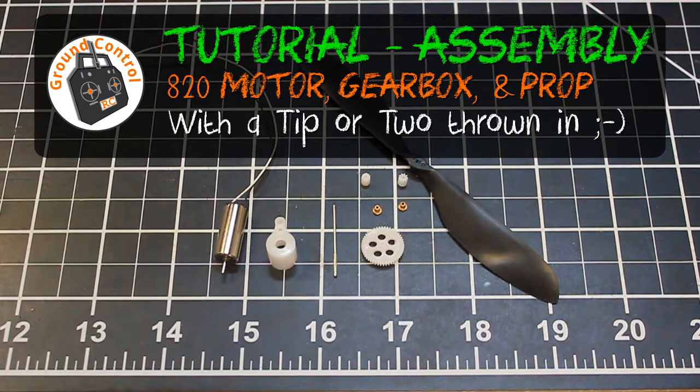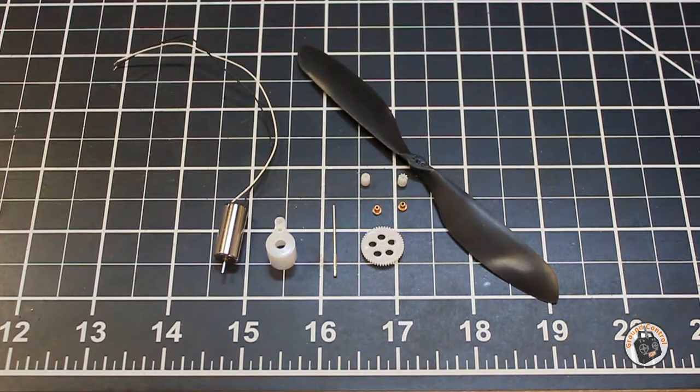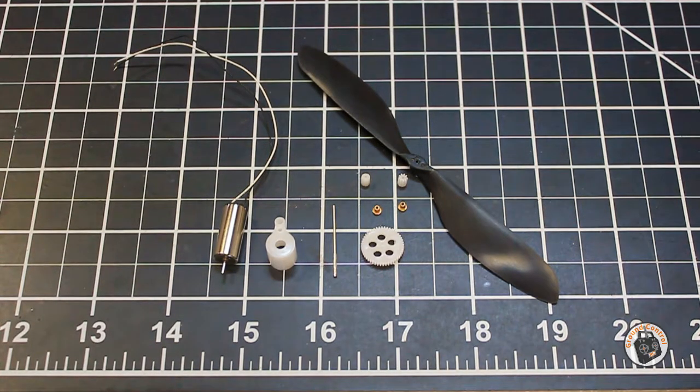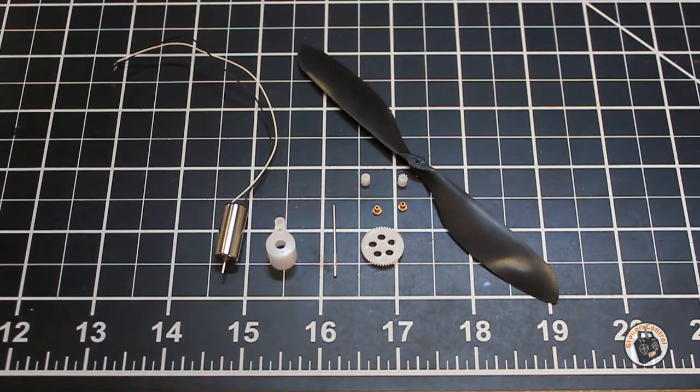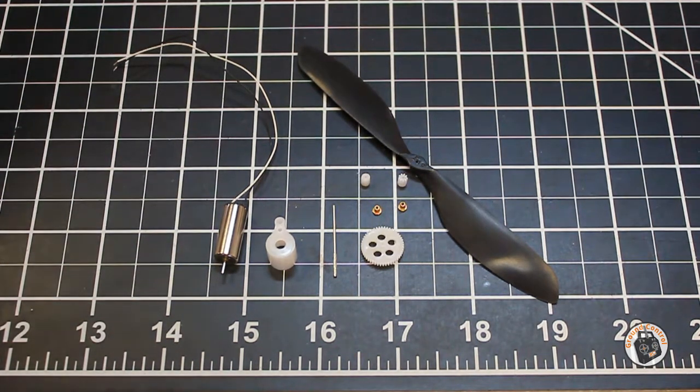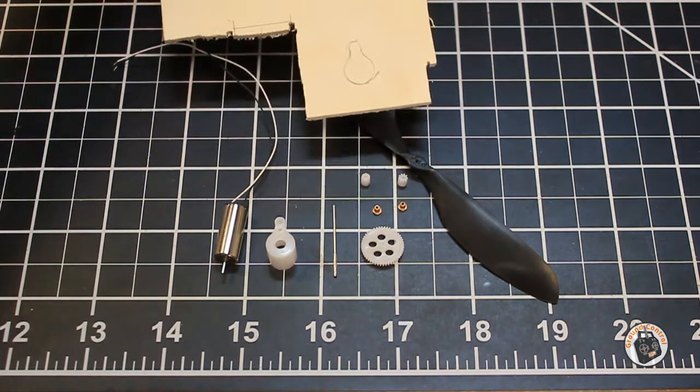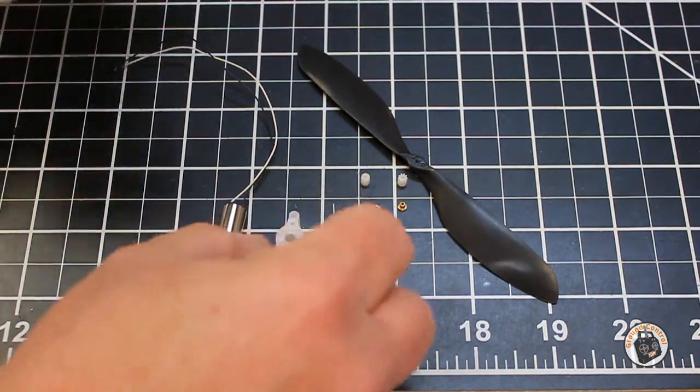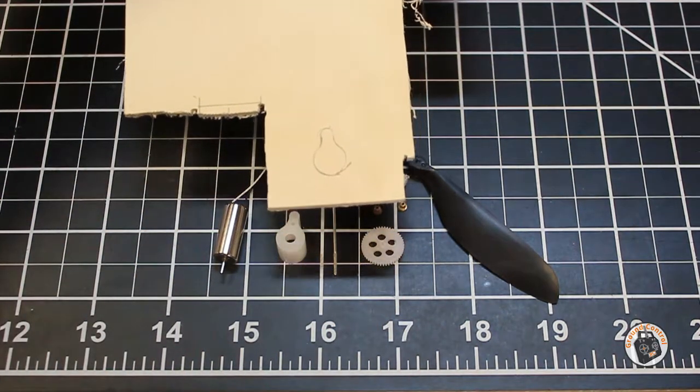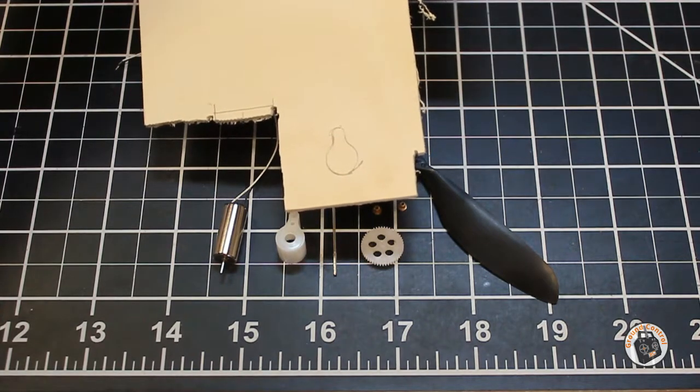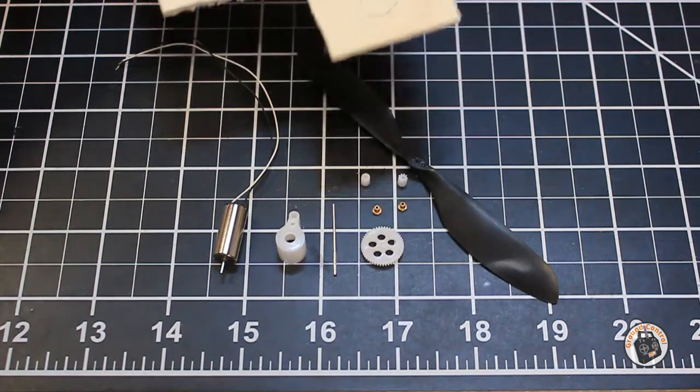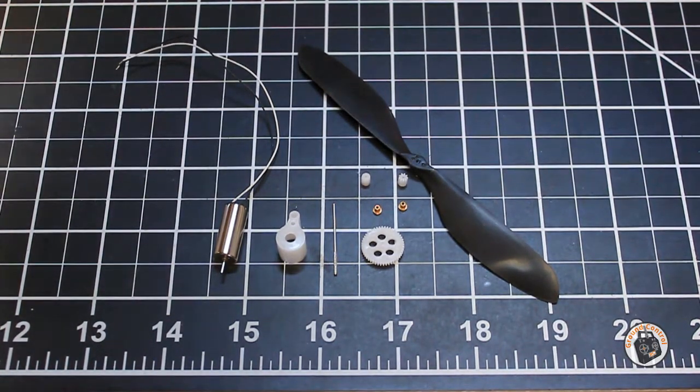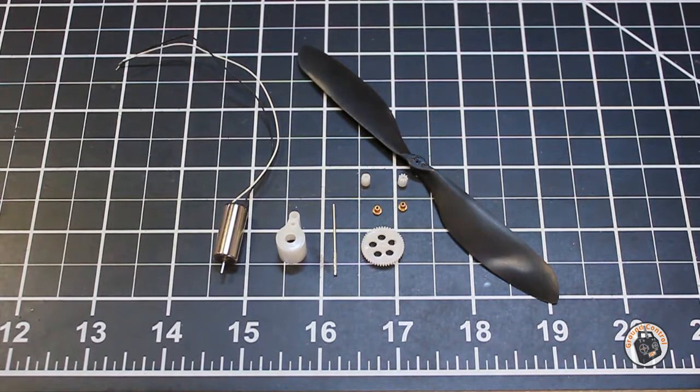Welcome to Ground Control. As promised, I have an assembly video for this little 80-20 brush motor gearbox and prop. As I stated in my initial review video, you're going to want to make sure before you assemble it that you take your little plastic housing and put it on whatever type of material you're going to use to make your mount plate. Make sure that you trace that out before you assemble it. It's going to be very difficult to try and trace that thing out on whatever type of material you're going to use after you've assembled it.